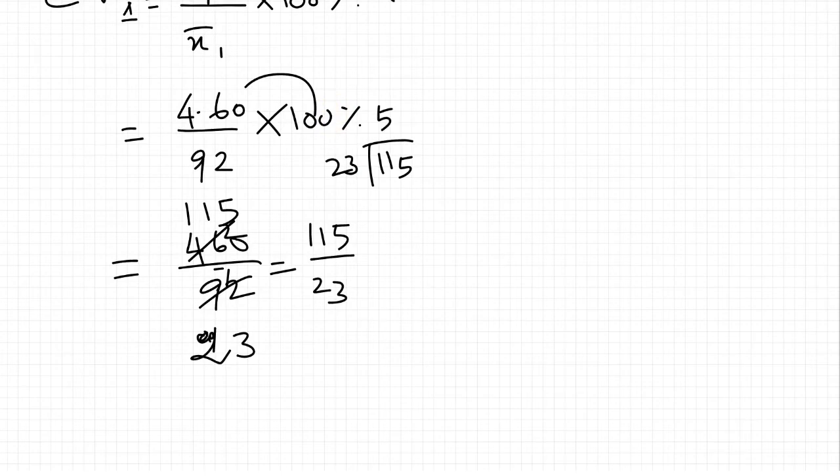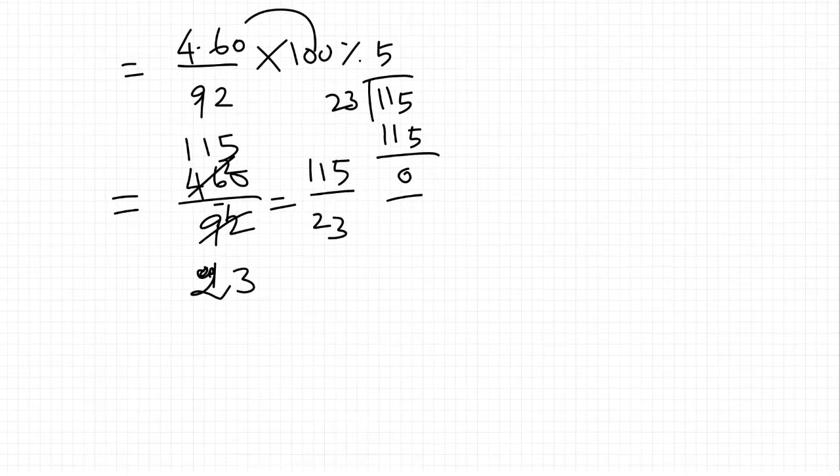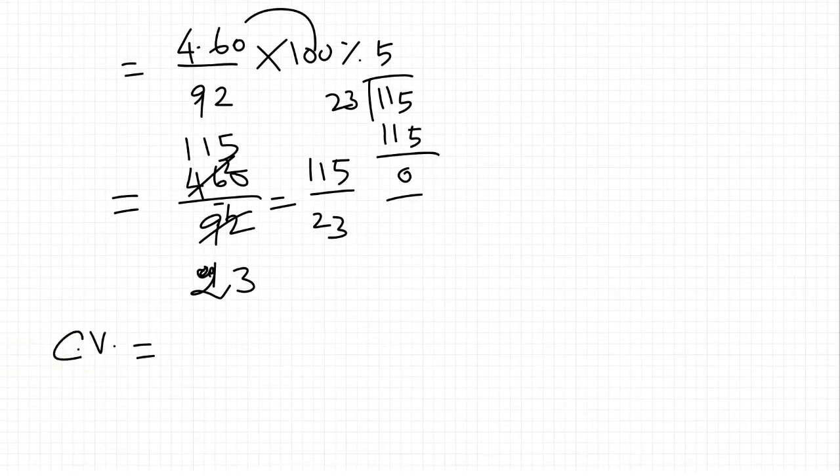5 times 23, so 5 times of 23 equals 115. So CV1, that is Sathya coefficient of variation, equals 5%.